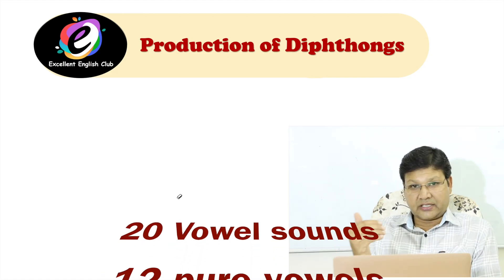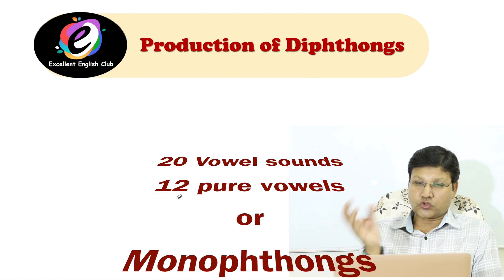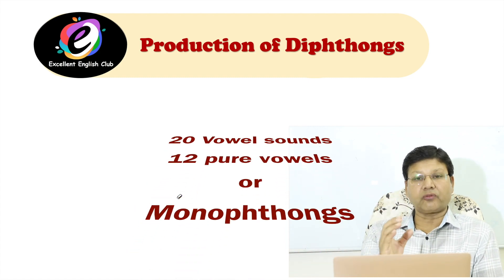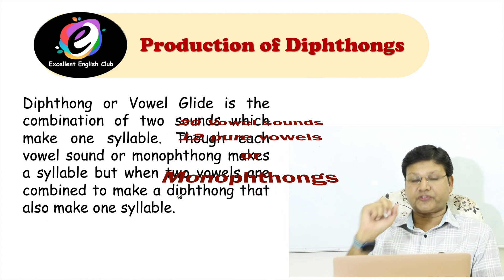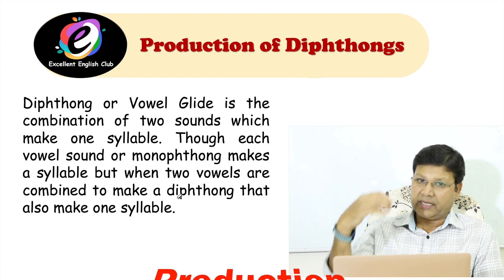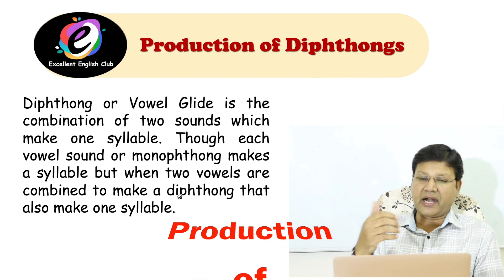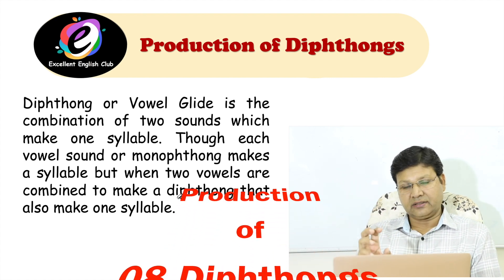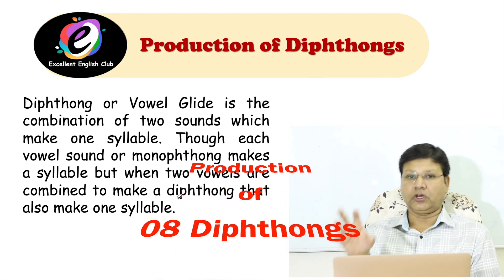As I told you, there are 20 vowel sounds: 12 pure vowels or monophthongs, which we have already discussed. Now the second part — 8 diphthongs.